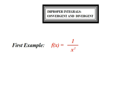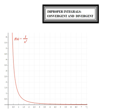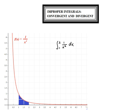The first example is the function 1 over x squared. Let's take a look at the graph, and we are going to look at a definite integral. We are going to integrate f of x from 1 to 2. One way to think about definite integrals is the area under a graph, so we are looking for the area of the blue region.